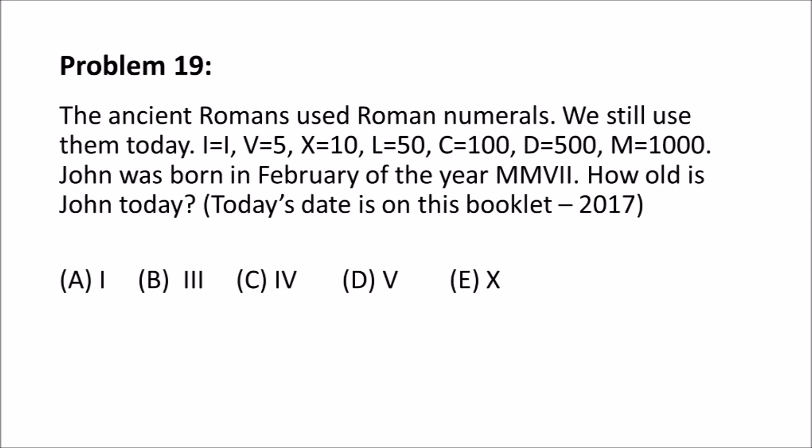Problem 19 reads, the ancient Romans used Roman numerals. We still use them today. I equals 1, V equals 5, X equals 10, L equals 50, C equals 100, D equals 500, M equals 1000. John was born in February of the year MMVII. How old is John today? Today's date is on this booklet, which equals 2017.